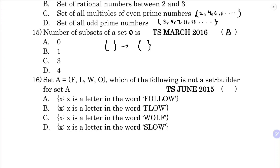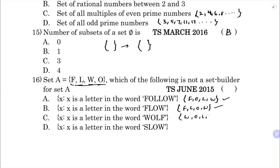Set A has the letters F, L, O, W. Which of the following is NOT a set builder form for set A? Option A (letters in 'follow' - F, O, L, L, O, W), option B (letters in 'flow'), and option C (letters in 'wolf') all give the same elements. Option D introduces the letter S, which is not in the given set. So the correct option is D.